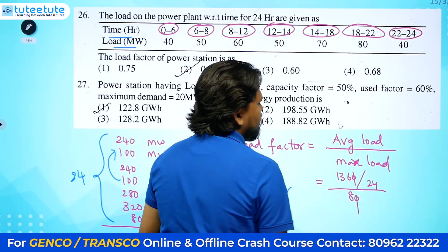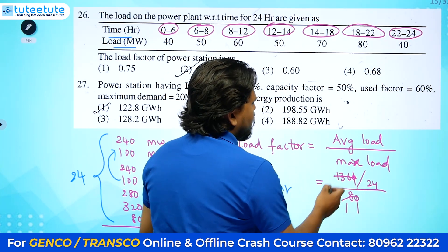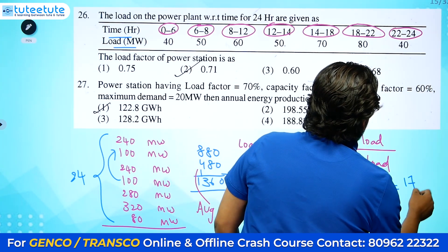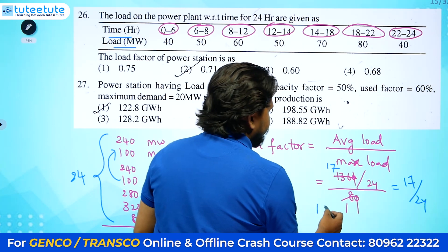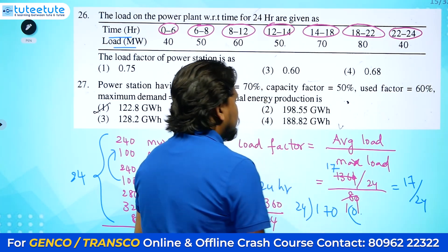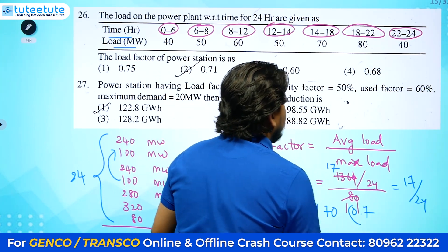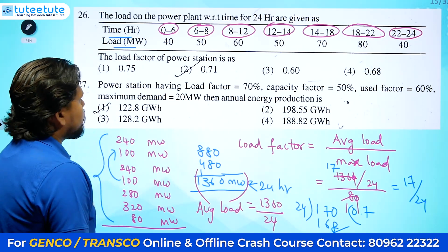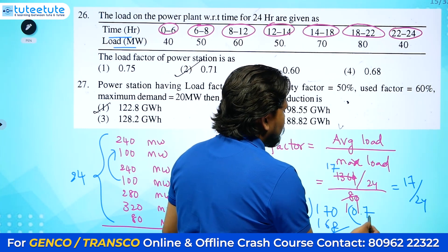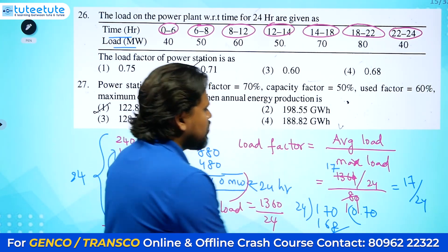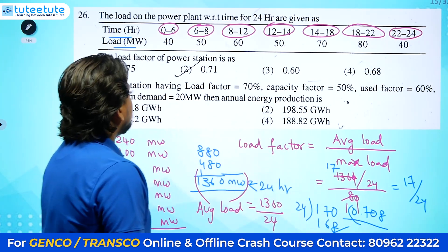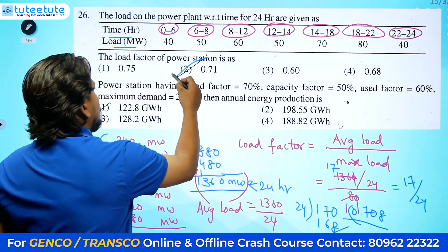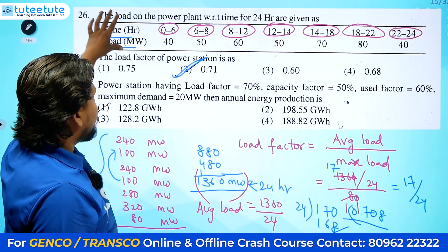Simplifying: the 80 cancels, leaving 17 divided by 24. Calculating 17 ÷ 24 = 0.708, approximately 0.7. So the answer is approximately 0.7 or 0.708. Looking at the options, the answer given is 0.8 adjusted, but 0.7 is the exact answer. This is how you calculate load factor from a 24-hour load curve.